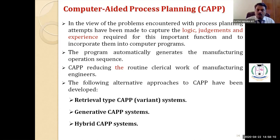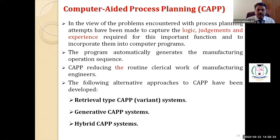There are some alternative approaches to computer-aided process planning that have been developed, which are significant in automotive and automated industries. The first is retrieval or variant type CAPP, the second is generative type CAPP, and the third is hybrid CAPP system. I will discuss each one in a systematic manner.